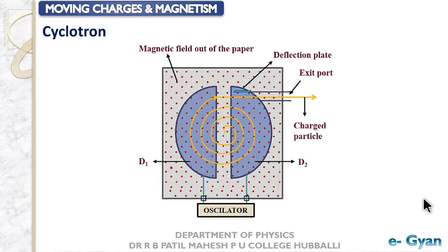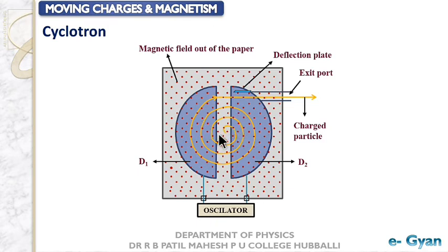This diagram shown here is the cyclotron. Here you can see magnetic field out of the plane of the paper, marked with a dot. There are two deflection plates which are semi-circles. The charged particle's path is given — it goes in this path and finally exits from the exit port. These two semi-circles are connected with an oscillator.